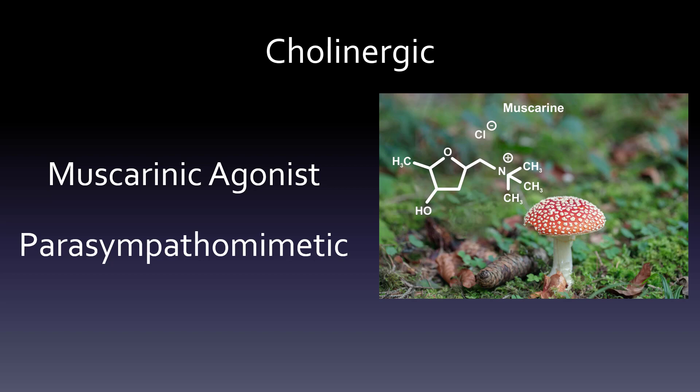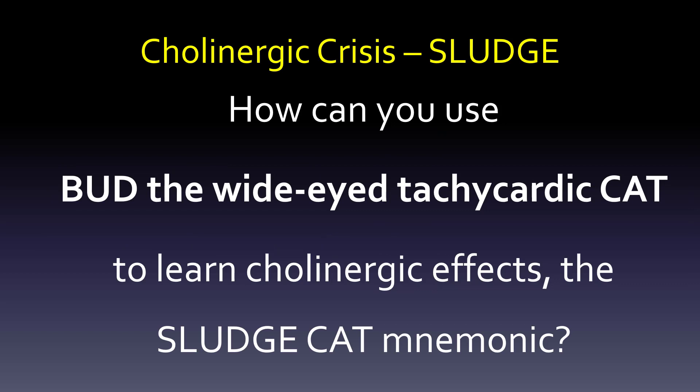So let's look at how we can use these opposites. We learned BUD — the wide-eyed tachycardic cat — and how that gives us the anticholinergics. Now let's go to the opposite: cholinergic crisis, where we have way too much cholinergic activity, too much acetylcholine. We'll take a look at our new cat.